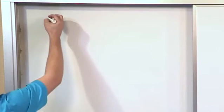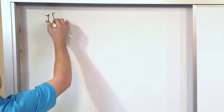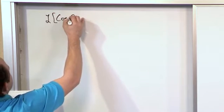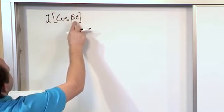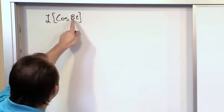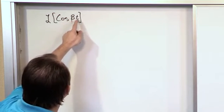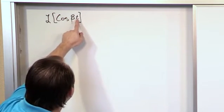All right, so let's say you wanted to find the Laplace transform of cosine beta times t. Now this in your book could be anything. You could see cosine at, cosine bt, cosine whatever. But there's a constant in front of the t.